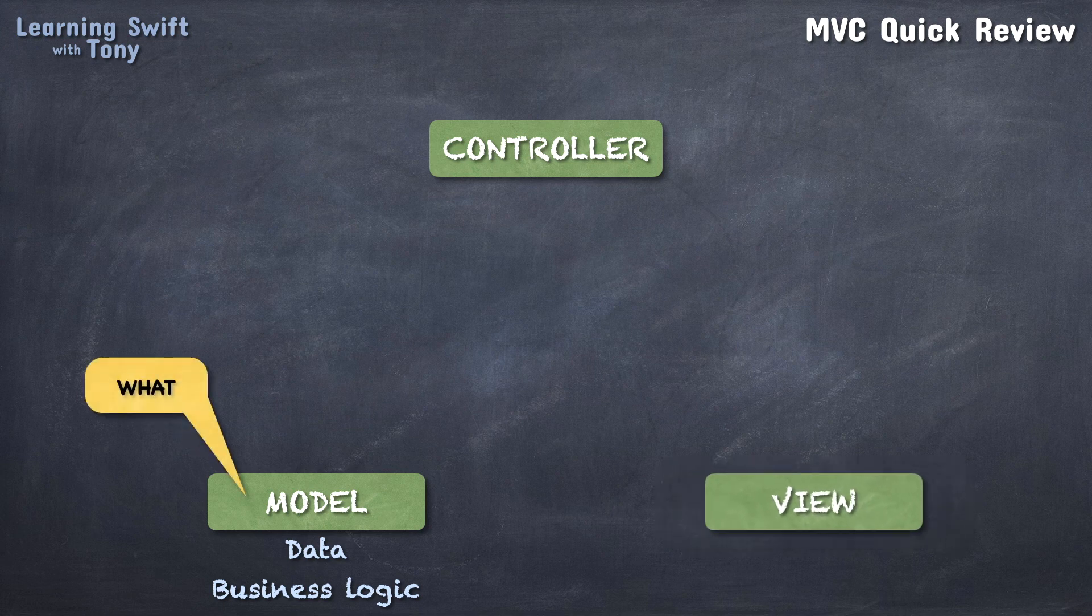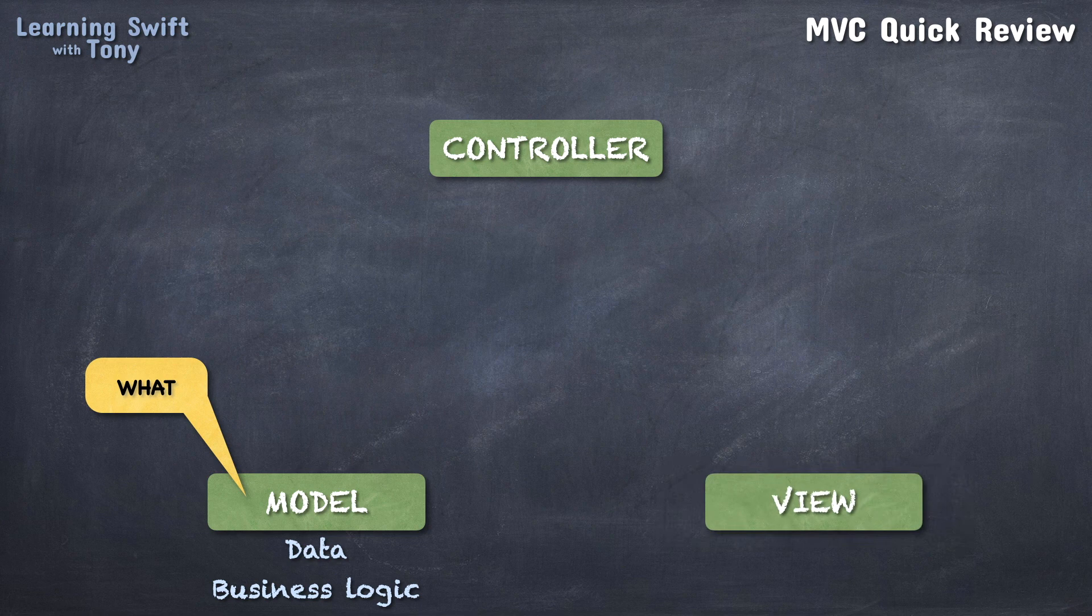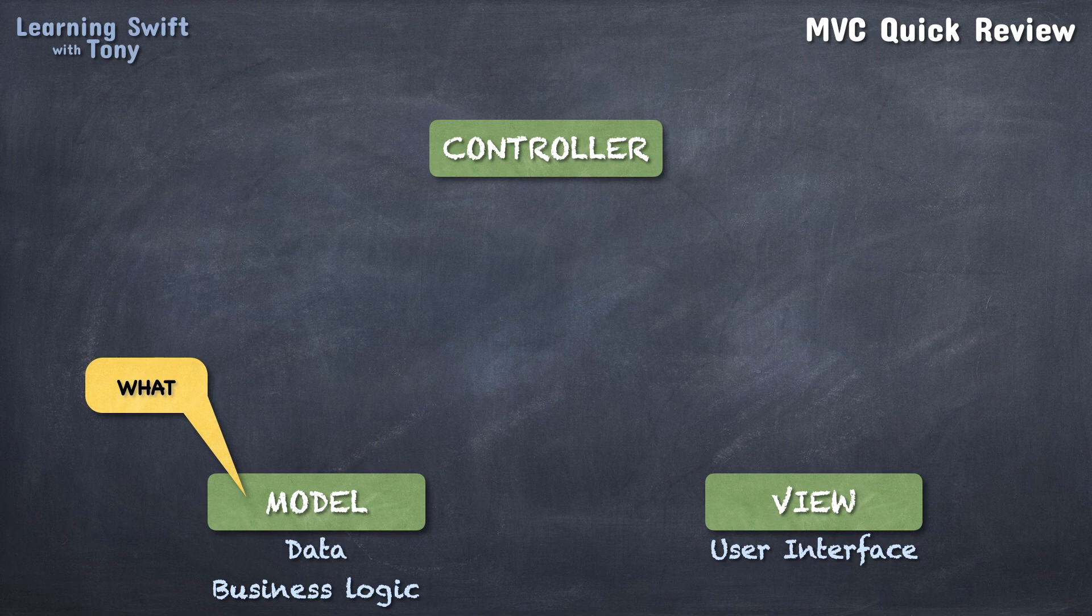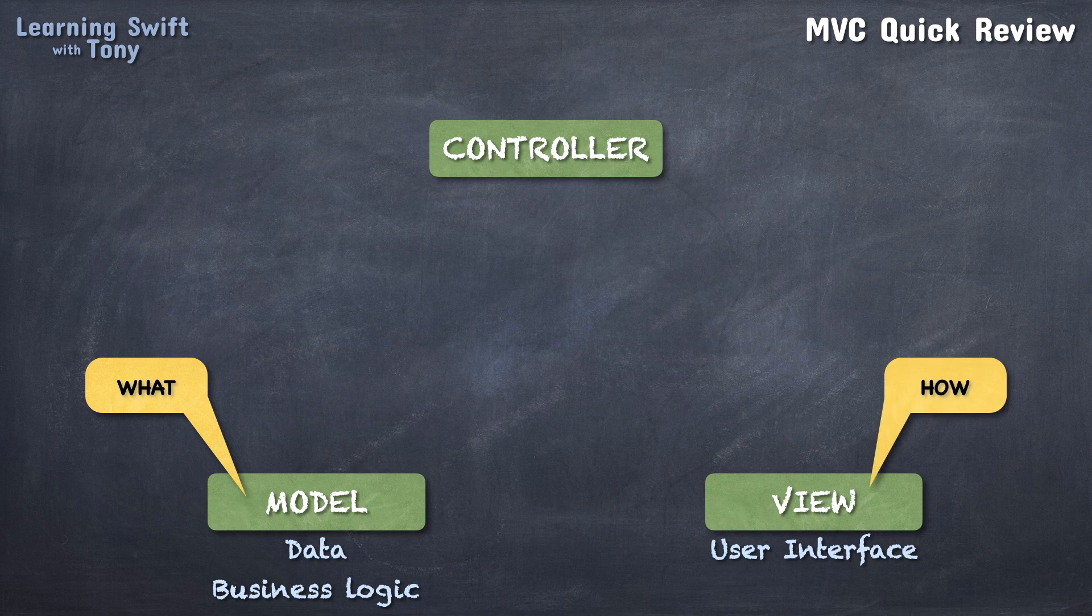The view is a collection of generic subviews representing the user interface, meaning what the user sees on the screen and what the user is directly interacting with. The view is the how of the app, how the app looks and feels.